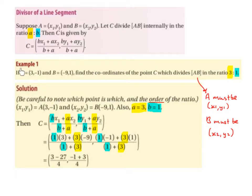Example 1: If A is equal to (3, -1) and B is equal to (-9, 1), find the coordinates of the point C which divides AB in the ratio of 3 to 1.